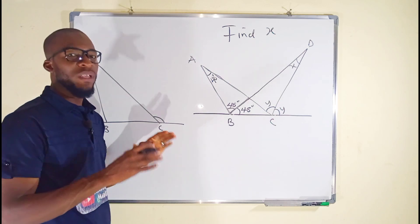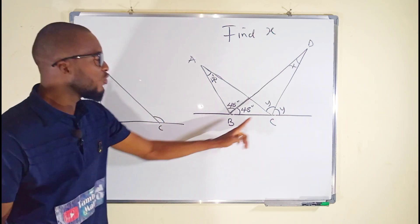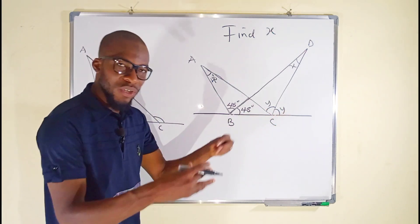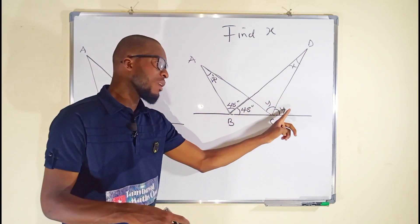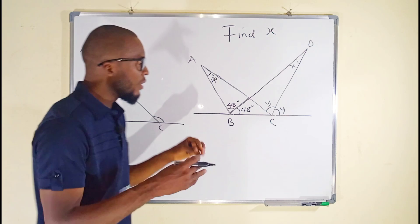And this angle refers to this y and y together. We have y and y because this angle and this angle are exactly the same, so the two of them making 2y.